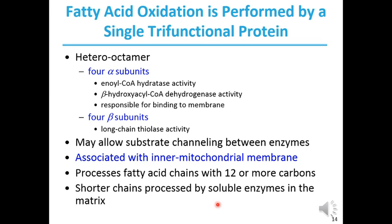Shorter chains are processed by soluble enzymes in the matrix. Once the trifunctional protein finishes processing 12-or-more-carbon fatty acyl-CoA, you are left with less-than-12-carbon fatty acyl-CoA chains. In that situation, soluble individual enzymes — such as individual enoyl-CoA hydratase and individual beta-hydroxyacyl-CoA dehydrogenase — floating in the matrix process these short-chain fatty acyl-CoA molecules.